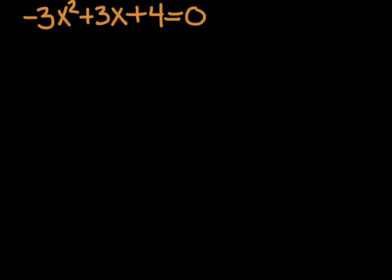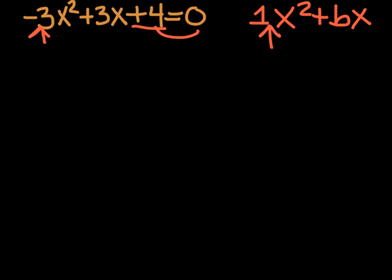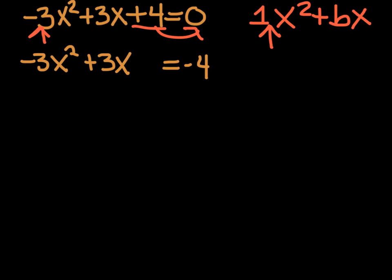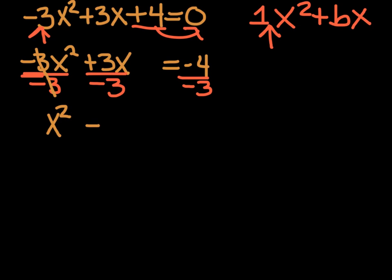Remember, the first rule is to isolate x squared plus bx, and note there is no a — a has to be 1. In this case we have a negative 3. So first I move the 4 over: negative 3x squared plus 3x equals negative 4. Before completing the square — and this is very important, this is where people will screw up — you have to get rid of the negative 3. You cannot complete the square until x squared does not have a coefficient other than 1. So divide everything by negative 3. Now we have x squared minus 1x equals positive 4 thirds.